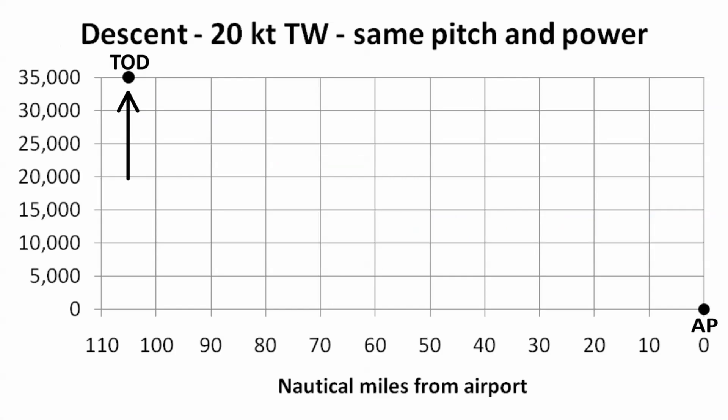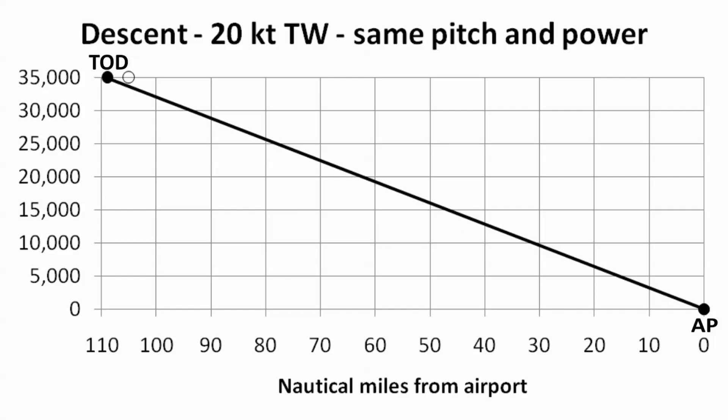With no winds at altitude, we start the descent 105 nautical miles away from the airport. With a 20 knot tailwind, we start down 4 nautical miles earlier. The geometric track from the top of descent to the airport is now 3.03 degrees, a little bit smaller than before. There's a huge advantage to correcting for a tailwind by adjusting the starting distance for the top of descent — we can make the descent using the same pitch and power settings as for the no wind case. We don't have to adjust the pitch and power for the wind. Adjusting the descent distance takes care of the tailwind effect.